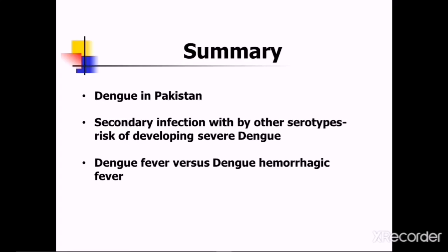In summary: the first confirmed outbreak of dengue hemorrhagic fever in Pakistan occurred in 1994. A dengue serotype 3 epidemic was first reported in 2005; in 2008, expansion to cities like KPK occurred; and in 2012, there was an outbreak in Lahore and other cities of Punjab. Dengue has four serotypes; recovery provides lifelong immunity to that serotype but only partial and temporary cross-immunity to others, so secondary infection with a different serotype increases the risk of severe dengue. The key difference between dengue fever and dengue hemorrhagic fever is that dengue fever has no critical phase, whereas dengue hemorrhagic fever includes a critical phase per the traditional WHO classification.